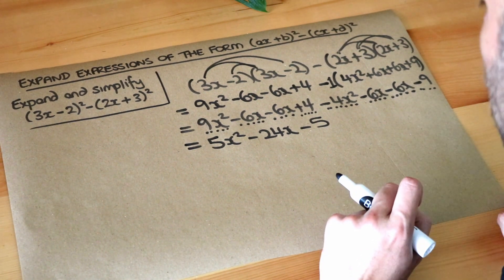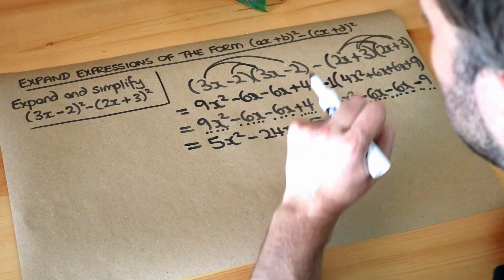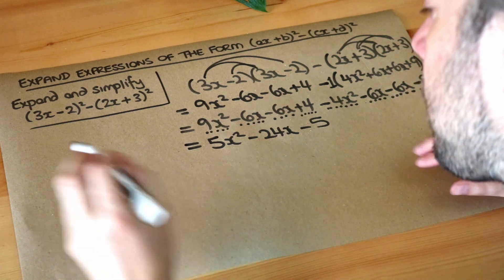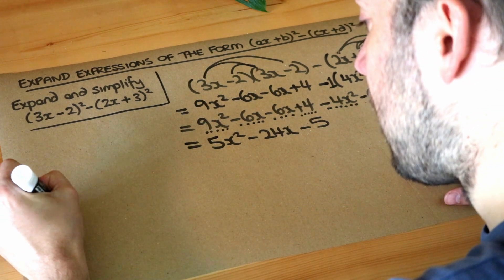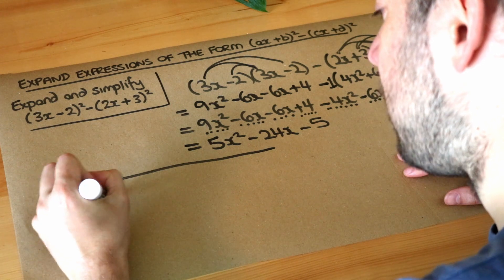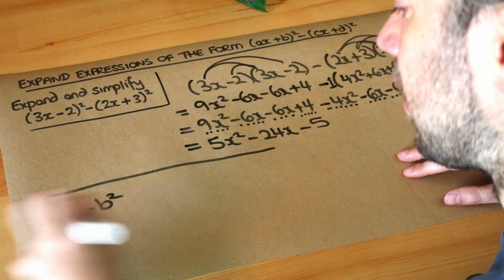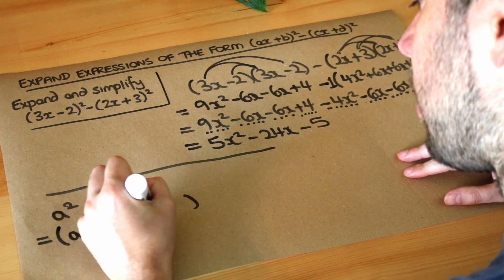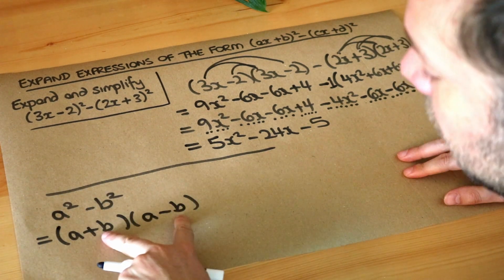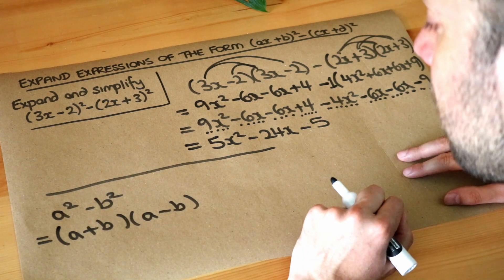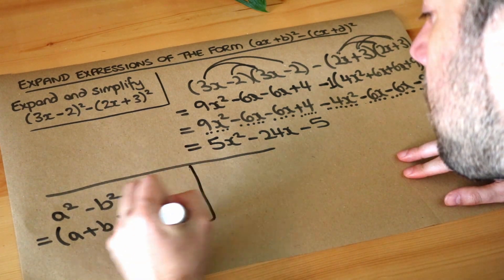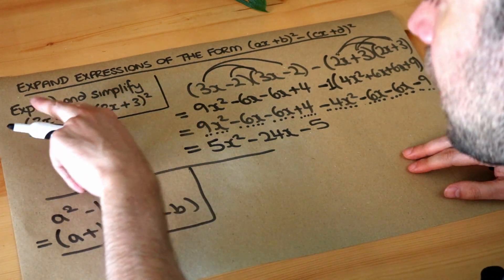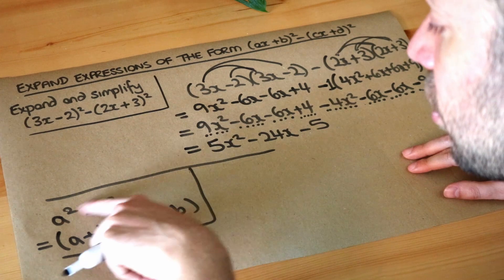Now there's a second more complicated way of doing this. And you can only do this if you know something called factorizing the difference of two squares. And factorizing difference of two squares is like this: if you had a² - b² you can factorize it, so put it into brackets by doing (a+b) times (a-b). If you were to expand out those two brackets you would get a² - b². So we could use that on this because look, a² - b², we've got something squared minus something squared just like we have here.